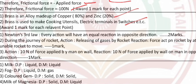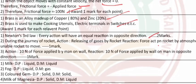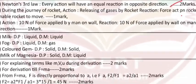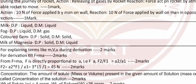Question 18: Newton's third law — every action has an equal and opposite reaction. During the journey of a rocket: action is the releasing of gases by the rocket; reaction is the force acting on the rocket by the atmosphere, enabling the rocket to move.